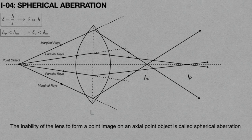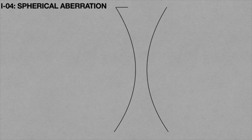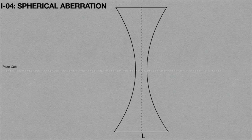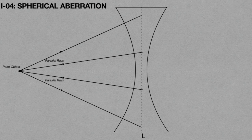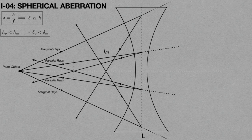The image of the object forms only in the shape of a circle, and in 3D view it is a sphere — that is why it is called spherical aberration. The spherical aberration for a convex lens is always positive, because the value of Ip is greater than Im. But for a concave lens, the spherical aberration is always negative, because the value of Im is greater than Ip. You can see the animation to understand why spherical aberration is negative for a concave lens.